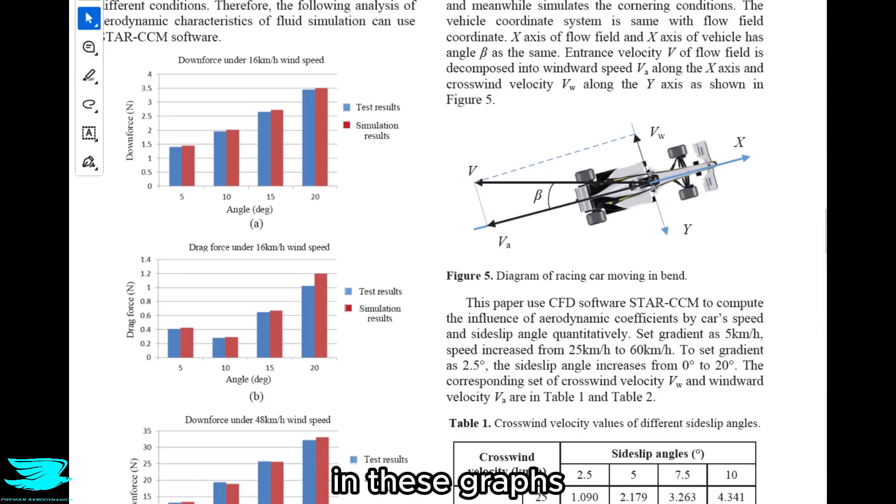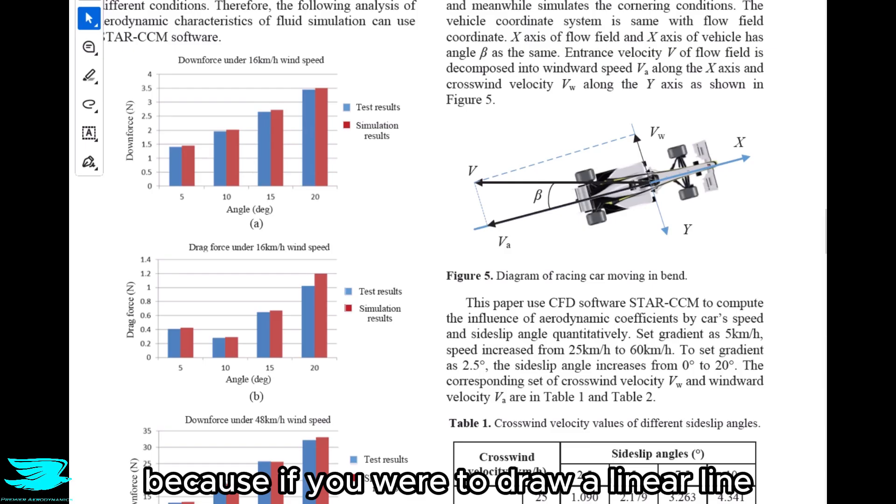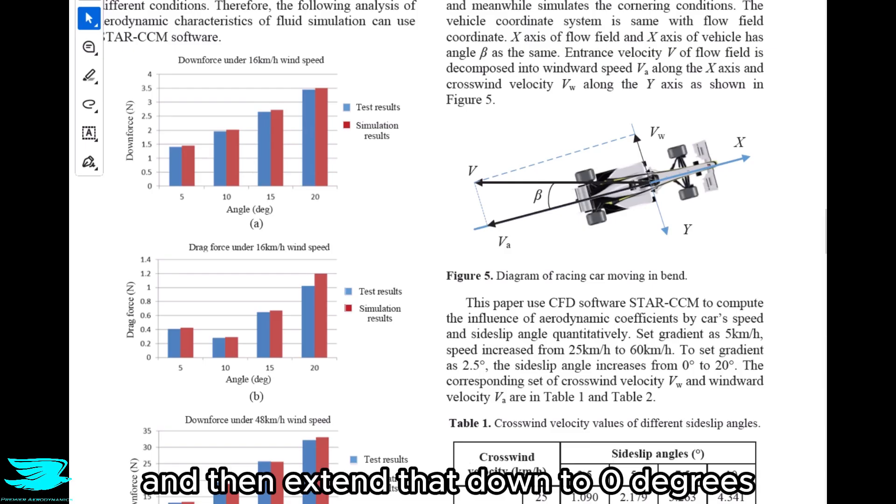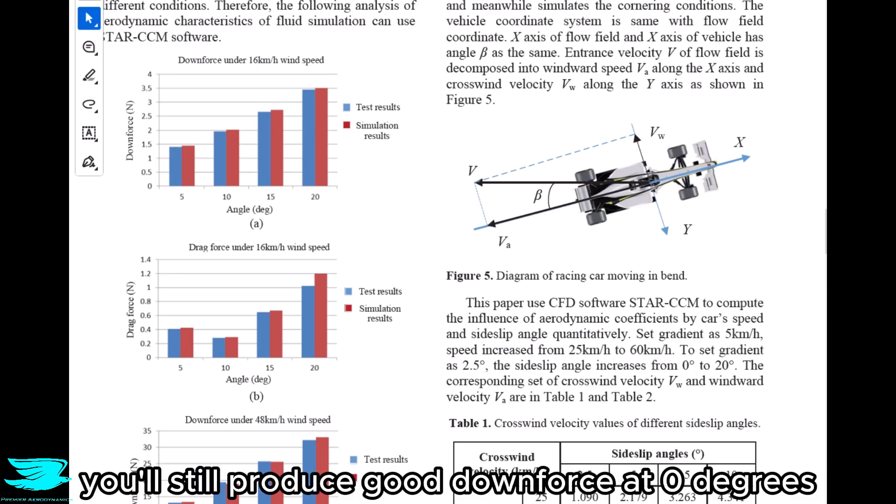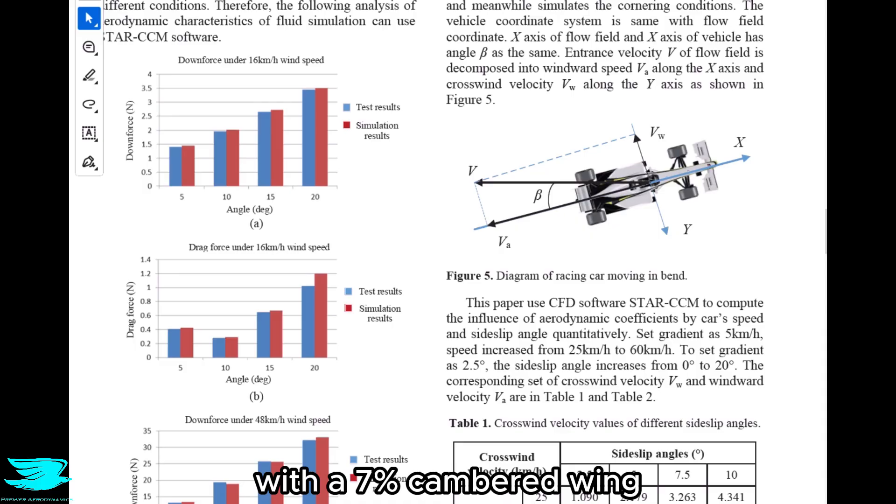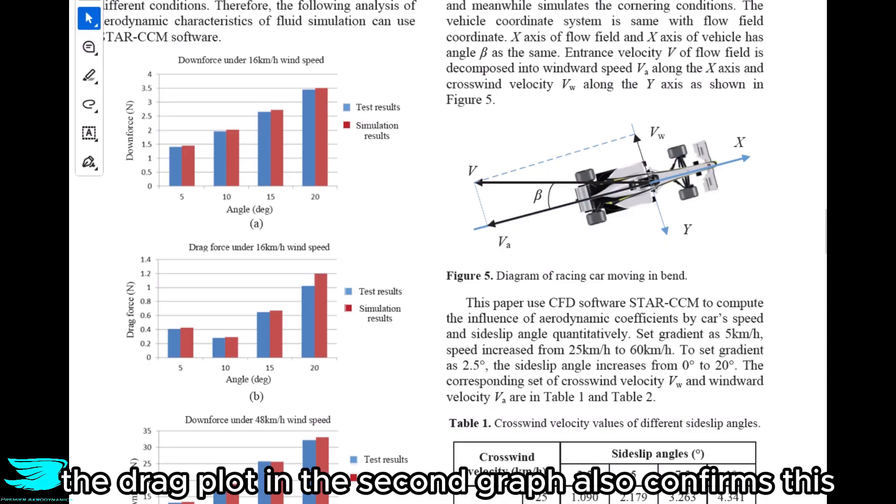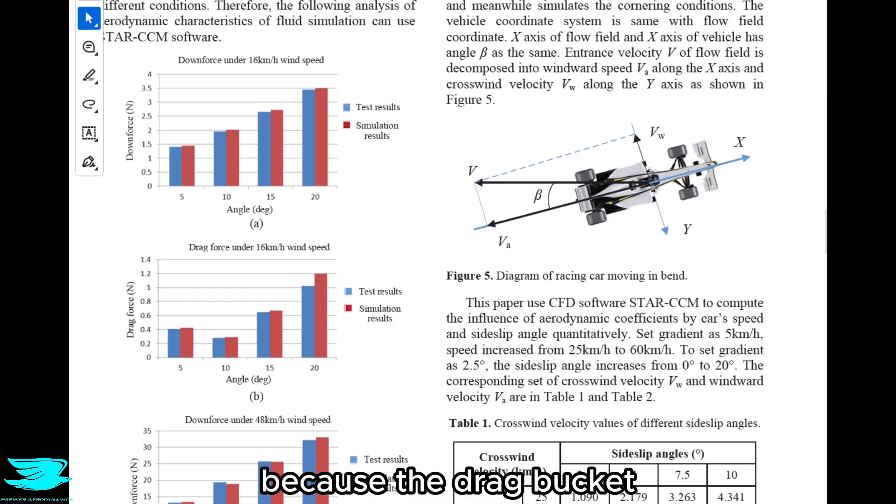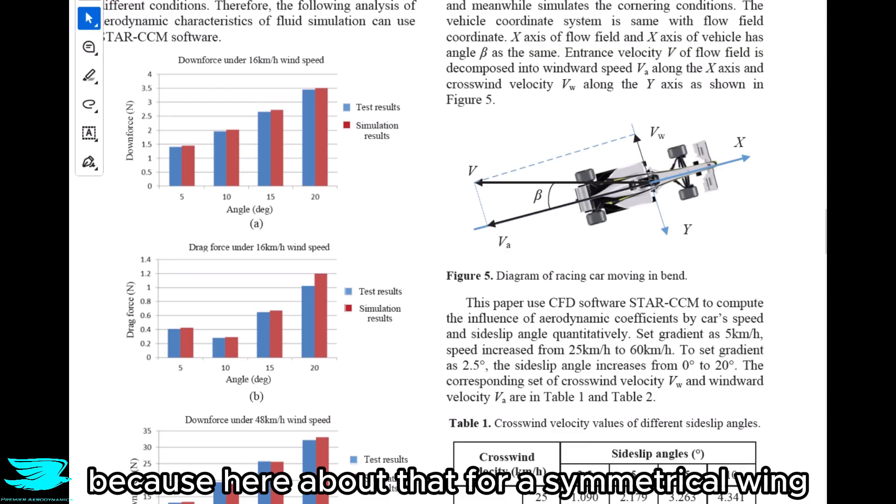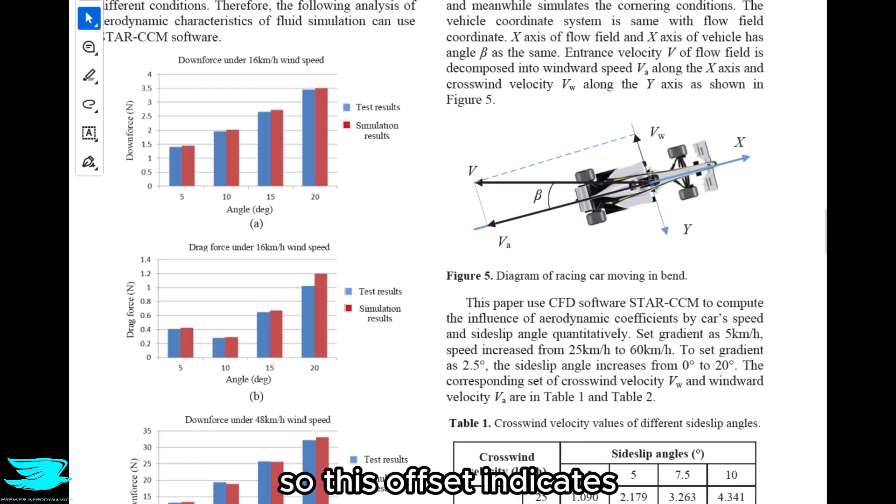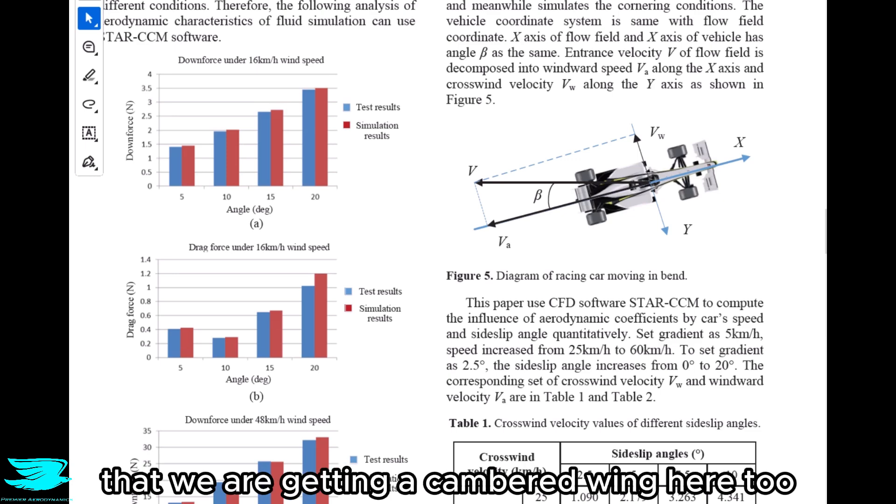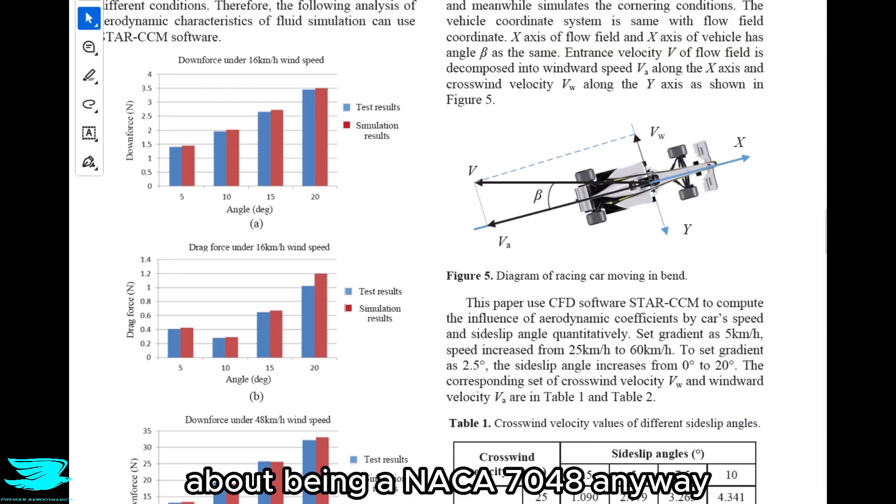In these graphs, we get some clues that kind of confirm that this wing was very cambered. We can tell that in the downforce graph on the top, because if you were to draw a linear line from 10 degrees to 5 degrees, and then extend that down to zero degrees, you'll still produce good downforce at zero degrees. Actually about the amount you would expect with a 7% cambered wing, about 0.7 or so, or maybe a little bit less. The drag plot in the second graph also confirms this because the drag bucket, this quadratic shape that you get, is very offset from zero degrees. It's more around 10 degrees. The minimum drag occurs here, whereas for a symmetrical wing, this should be about zero degrees. So this offset indicates that we are getting a cambered wing here too. So these graphs match what the authors were saying about being a NACA 7048.